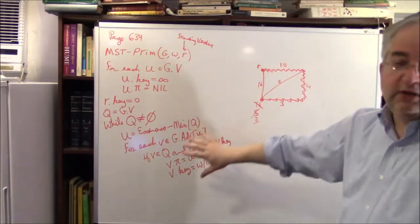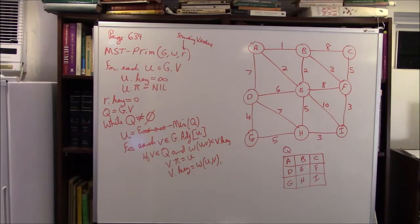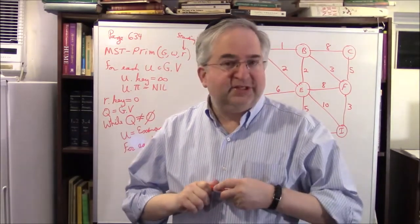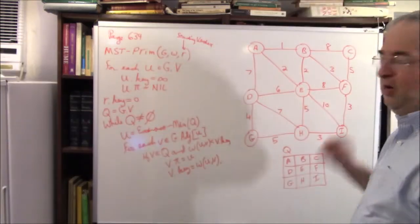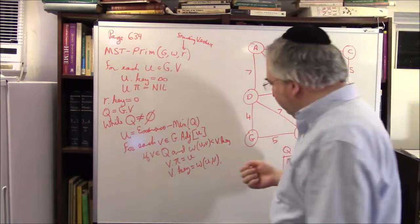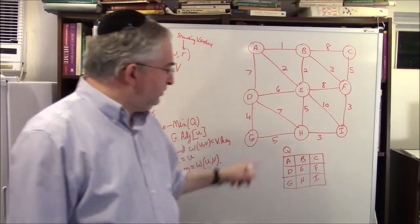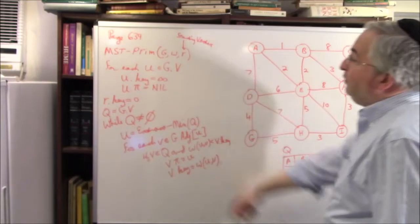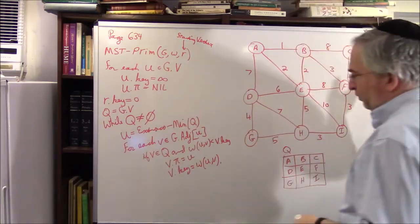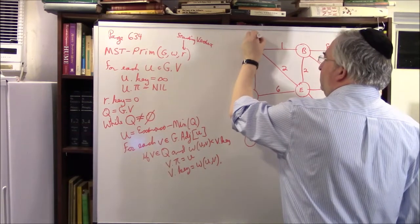Let's do a big example — it's exactly the same graph as before, so I can verify we get the same weight of 25. Here we have to keep track of who the parent is, so I must give names to the vertices. A vertex's parent is going to change as the algorithm runs. I write out Q over here. For each vertex, set key to infinity and parent to nil. Start with R.key = 0. Q equals all the vertices.